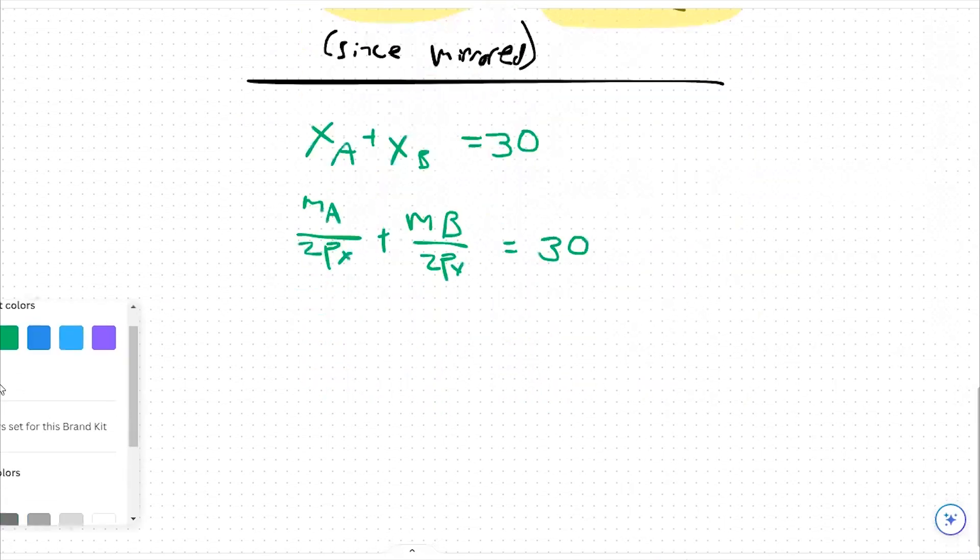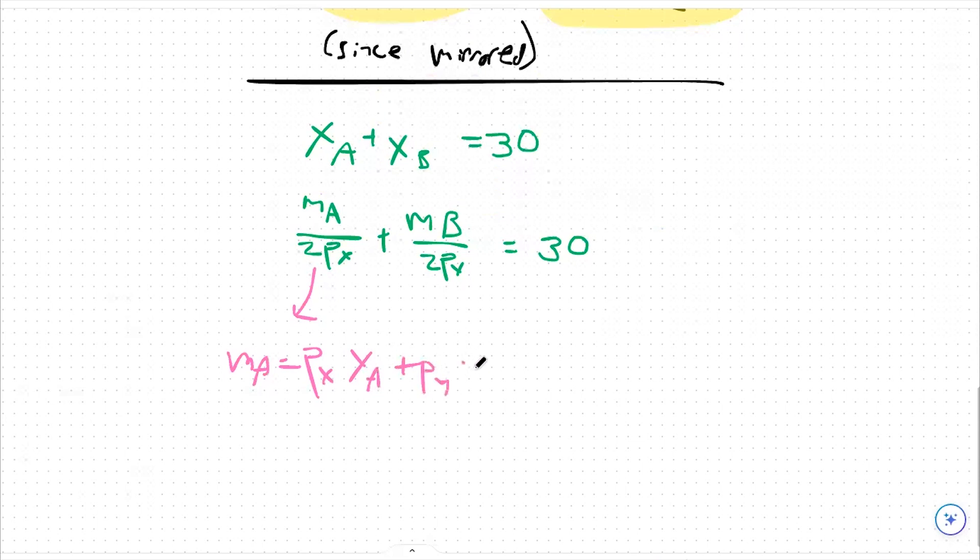And from there, we're going to do one more expansion of things. We're going to say first, let's look at the MA side. Our income for person A is such that it equals to px, xA plus py, yA. We've established that before.